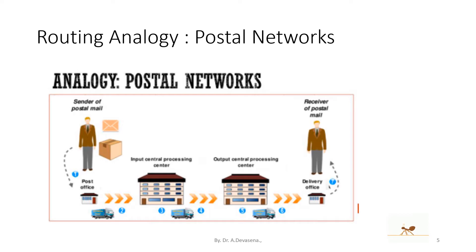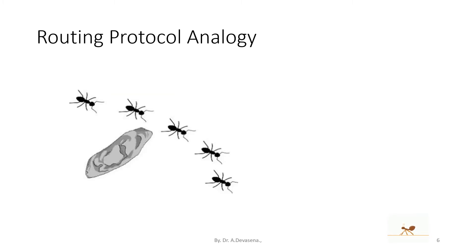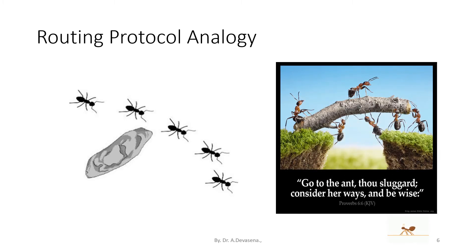In this manner, the information from the sender reaches the receiver with the help of routing protocols. We will discuss the routing protocols in detail in further slides. Let us see the routing protocol analogy. In this diagram, the ants find their path and easily avoid obstacles. This is a simple analogy for the routing protocol. In another representation, the ant can create a path — consider her ways and be wise.